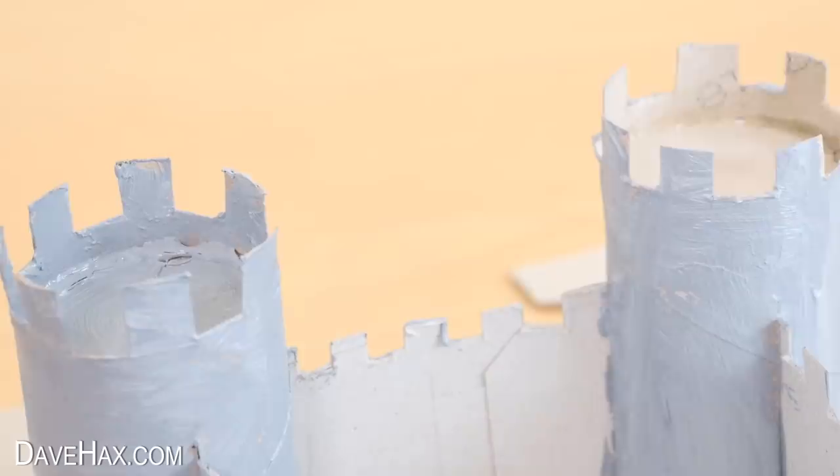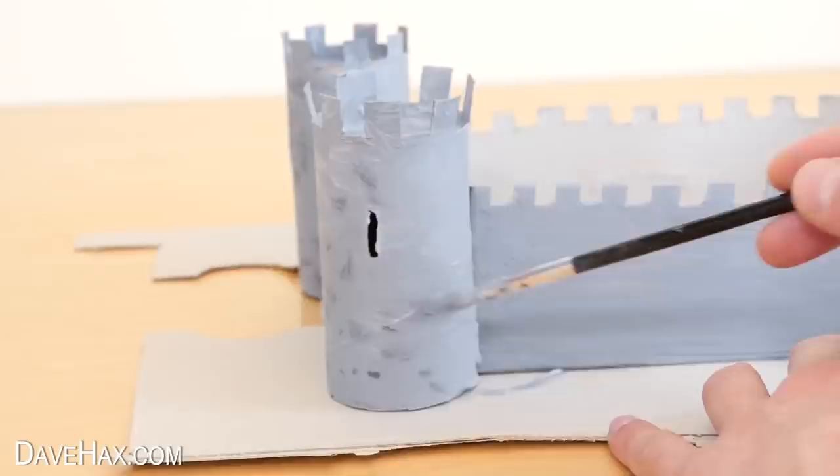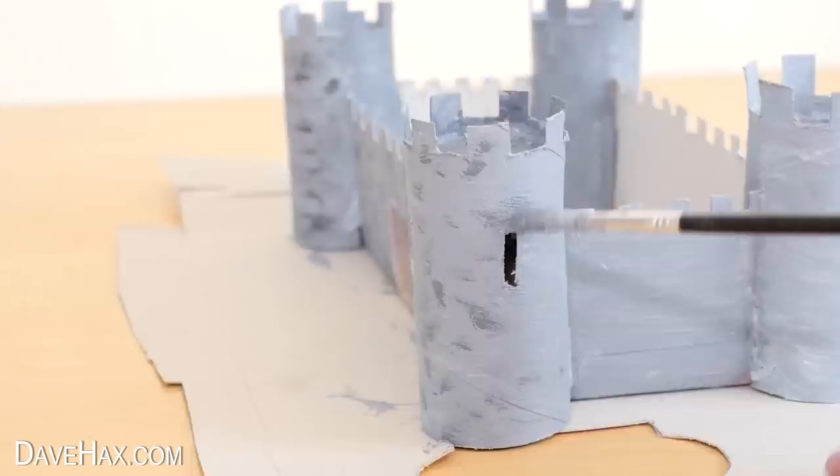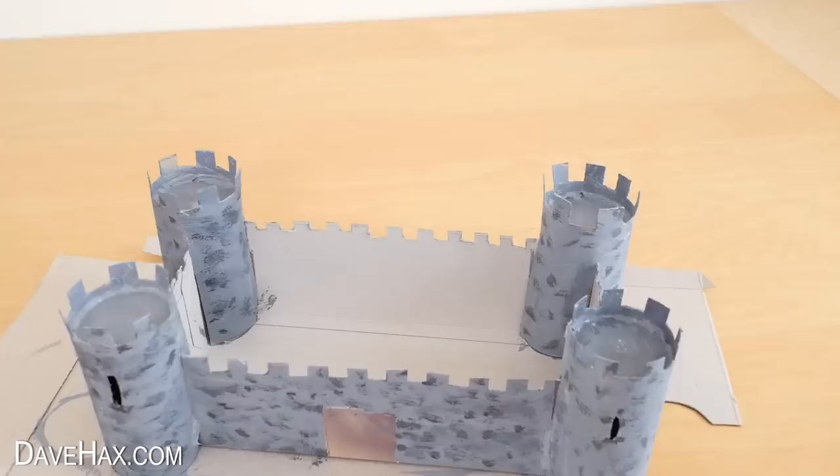Then I mixed a little bit more black into the grey paint and used it to paint some darker textures onto the walls, like this. I worked my way all around, and I found I had enough paint to do the inside of the walls too.